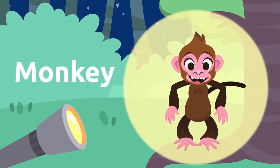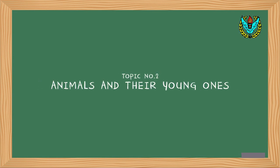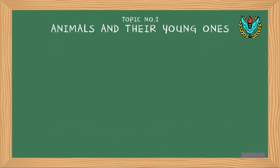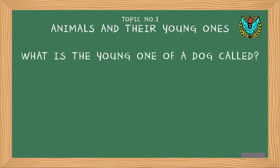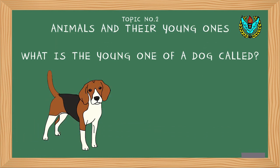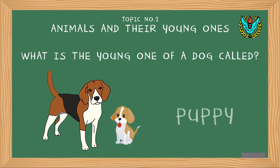Now let's move to our second topic: Animals and Their Young Ones. Toh bachou, is topic mein hum animals ke babies ke baare mein baat karenge. Hamara pehla question hai: What is the young one of a dog called? The answer is puppy.